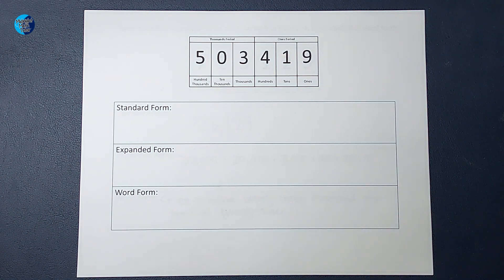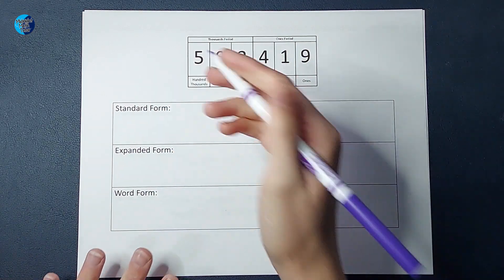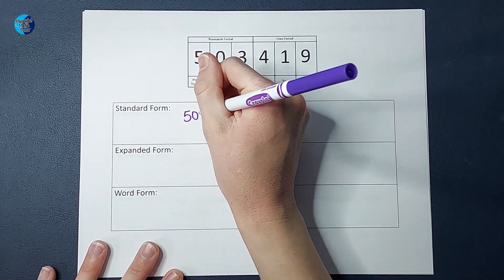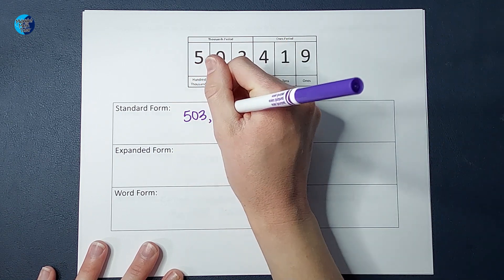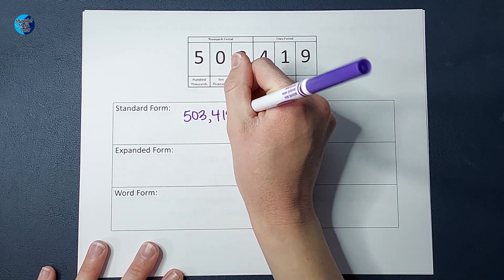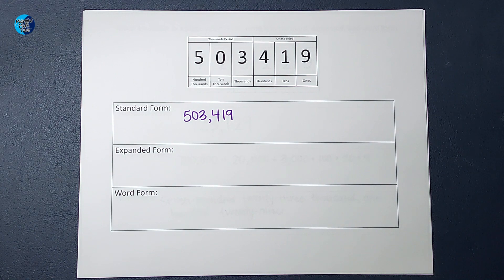All right. So, standard form of this is how we are just used to seeing numbers in the everyday world where we group them by threes. So, 503,419. There is my standard form.